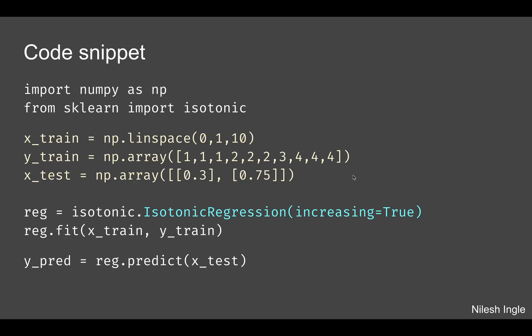Now let's look at the code snippet. The library we are going to use is isotonic. Similar to before, we have x_train, y_train, x_test, and we create a variable reg and fit using reg.fit, which uses isotonic.IsotonicRegression. Here we can specify increasing=True or False; the default is True, meaning we are fitting a continually increasing fit. If we are looking for a continually decreasing prediction, we need to specify False.